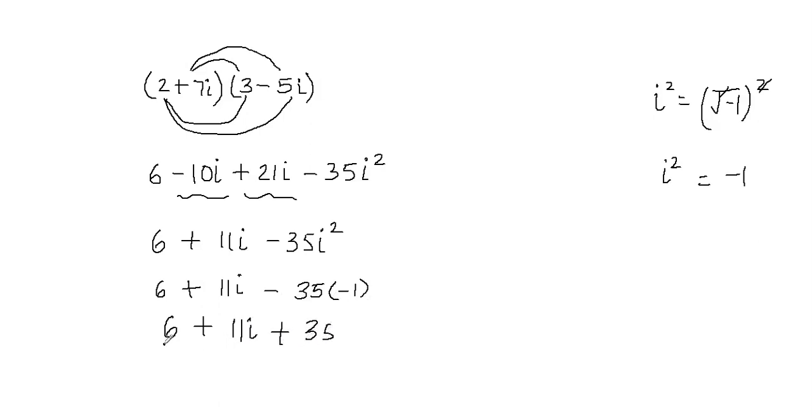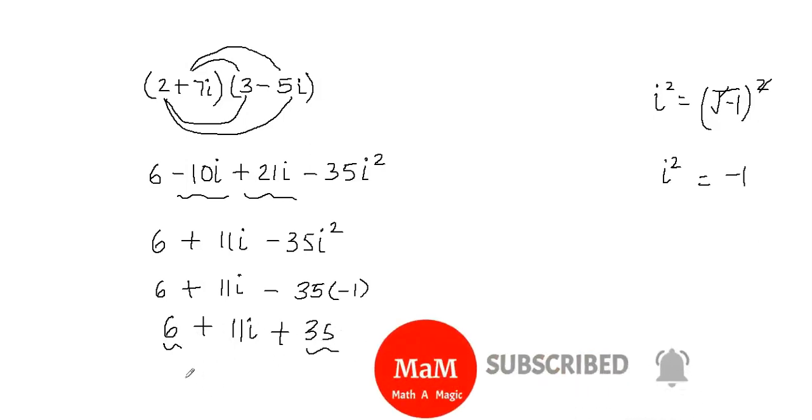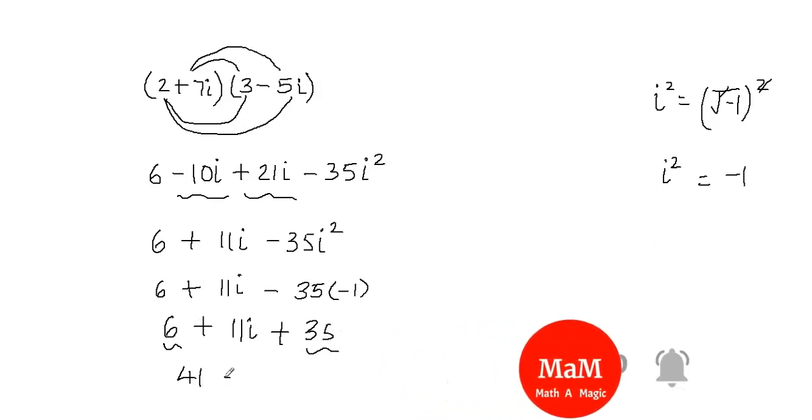Again, we have the like terms 6 and 35. We're going to combine these two terms. 6 plus 35 will give me 41. So I got 41 plus 11i. So my answer is 41 plus 11i.